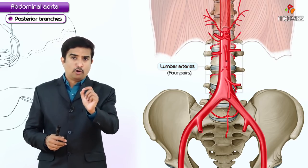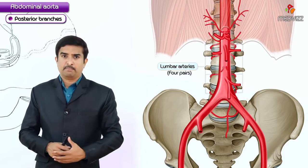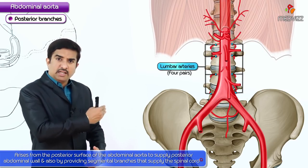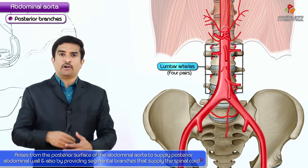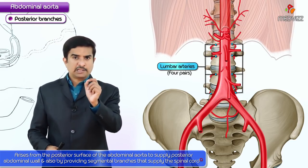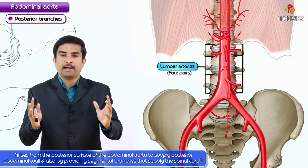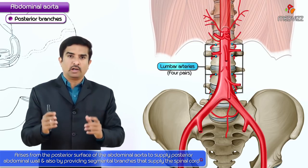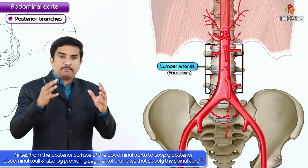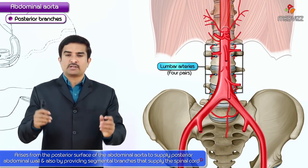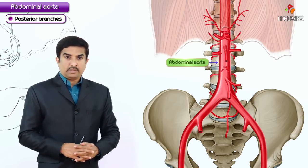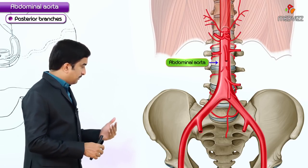There are usually four pairs of lumbar arteries arising from the posterior surface of the abdominal aorta, supplying the posterior abdominal wall and providing segmental branches that supply the spinal cord.